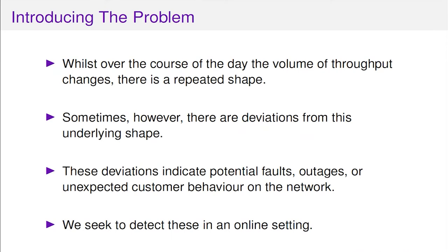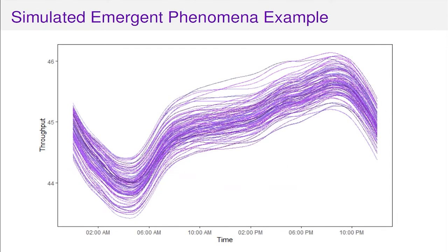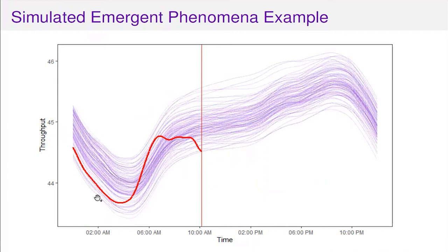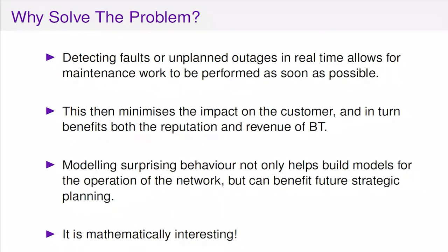Those deviations indicate potential faults or outages on the network, or just unexpected customer behaviour. We want to detect these in an online setting - we want to get them as soon as is practicable. We don't want to be waiting until midnight the following day to say something went wrong at ten past two - it's pointless. As soon as it starts to go wrong, as soon as it emerges, we want to capture that anomalous behaviour. I've got a simulated example: some curves with a repeated shape, and if a new day starts to not follow the profile, we'd want to say around ten o'clock that something is wrong.